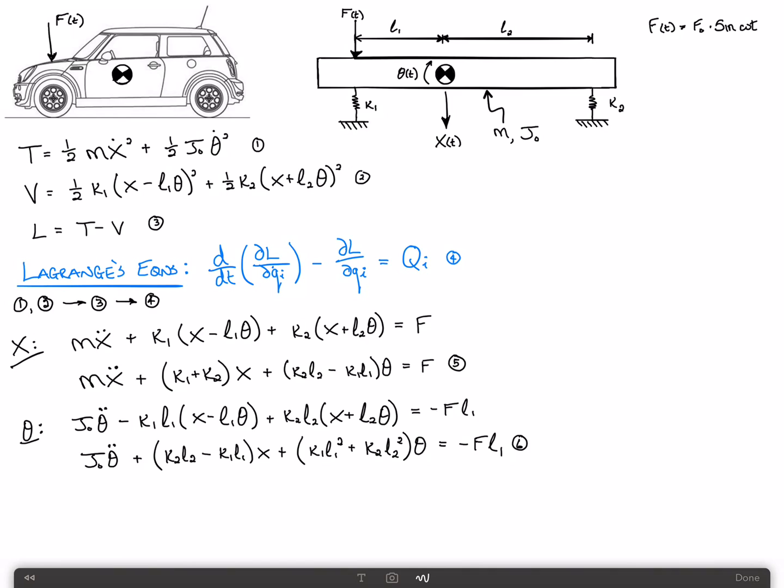And then finally, I'm just going to write 5 and 6 in matrix form, since that's how we like to write these things. Makes it more convenient. Again, this implies the mass matrix looks like M 0, 0, J sub 0 times X double dot, theta double dot, plus the stiffness matrix is K1 plus K2, K2 L2 minus K1 L1.